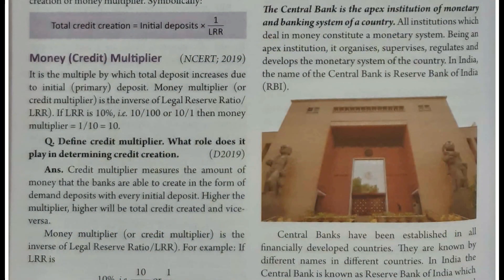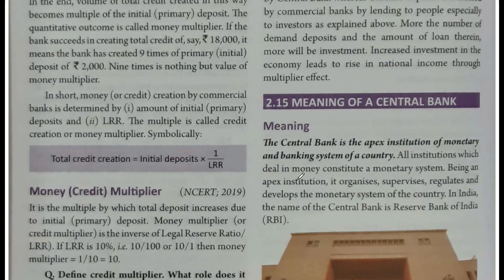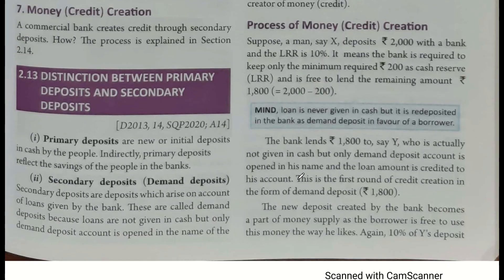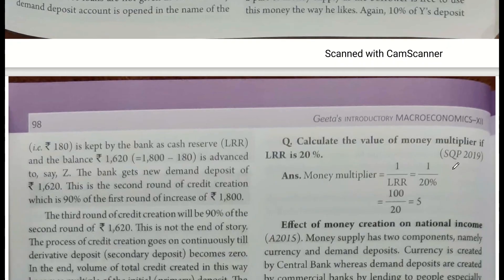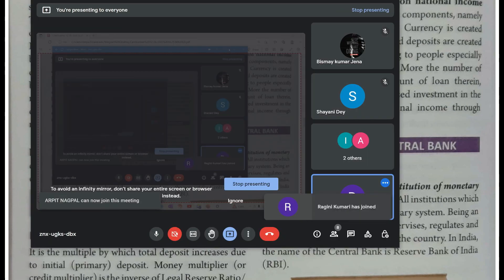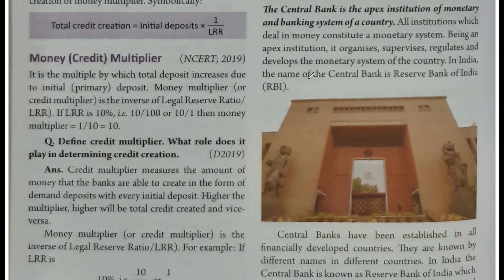Hello everyone. Namaskar dosto, True IES mein aap sabka swagat hai. Previous lecture tak hum log ne baat kar li thi ki commercial banks kaise money create karte hain. Is process mein humne dekha tha ki LRR ke through - primary deposit accept karke phir usko secondary deposit mein convert karke. Yeh jo cash reserve hai jise hum legal reserve ratio kehte hain, iske through bank paisa banata hai. Paisa ek stage pe nahi, multiple stages par banta rehta hai - isi ko money creation aur credit creation kehte hain, aur is process ko money multiplier ka naam diya jaata hai.